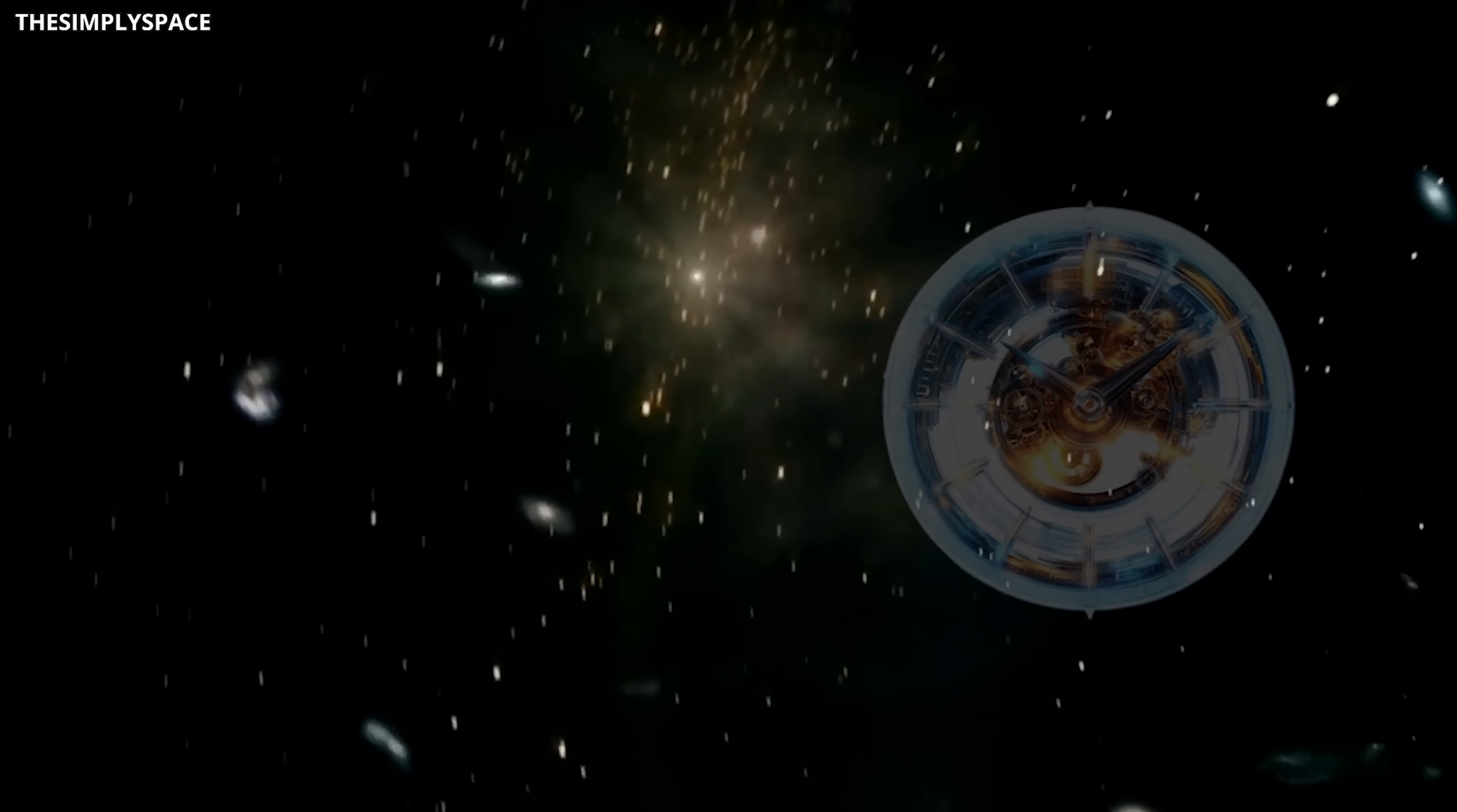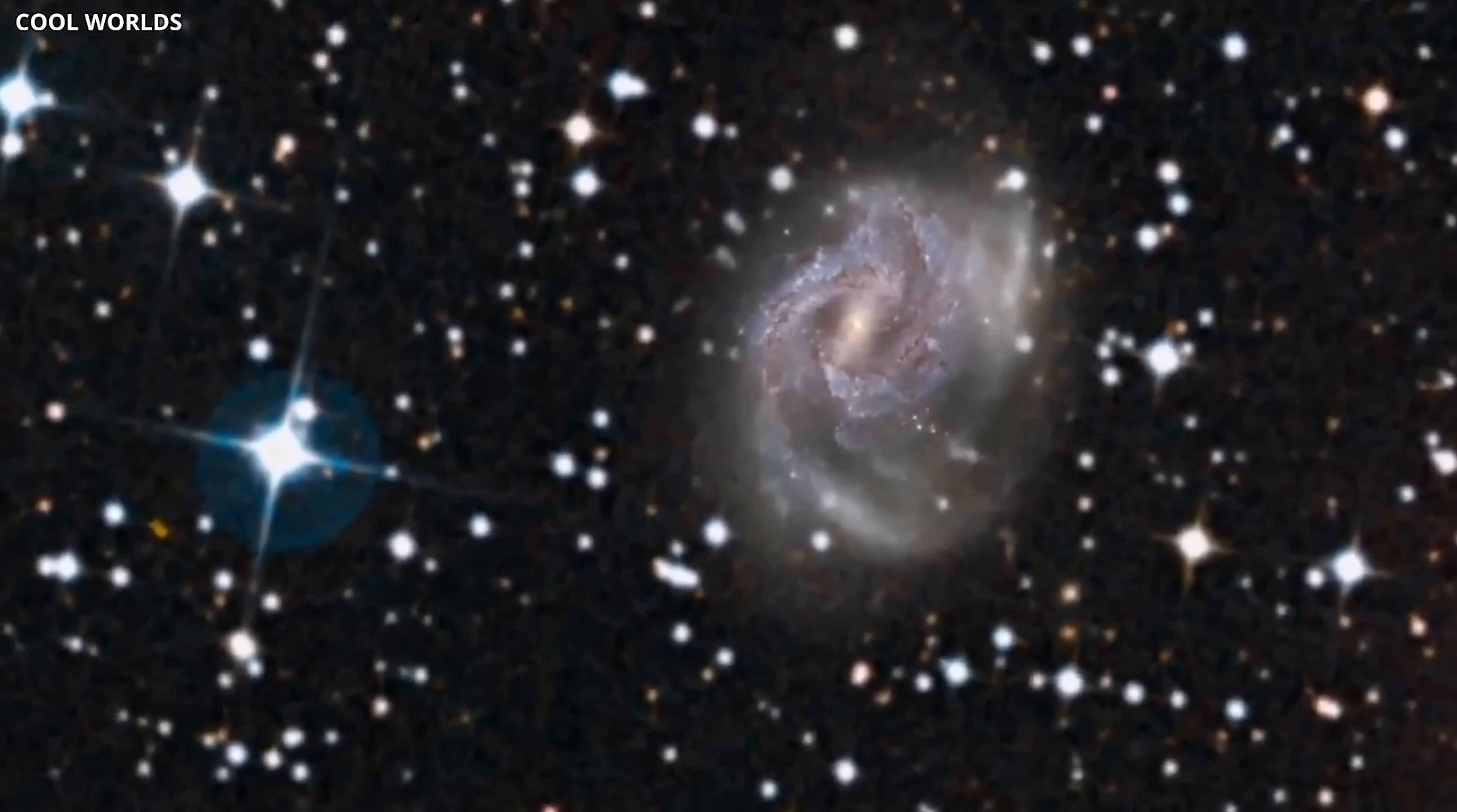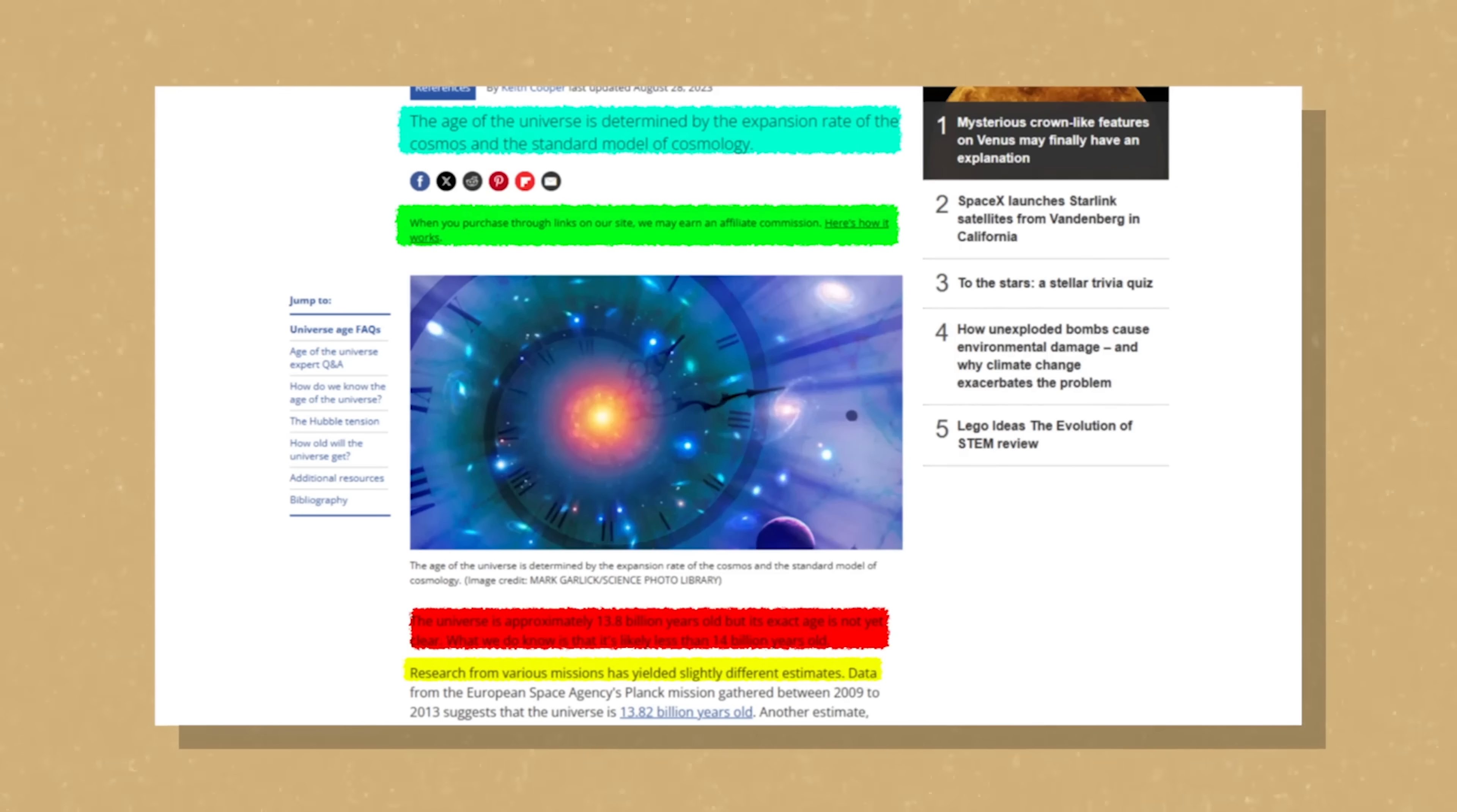For example, an atomic clock located within a galaxy could measure time as being up to one-third slower than an identical clock placed in the midst of a large empty void. Now, consider this over the extensive timescales of the universe. The universe is approximately 13.8 billion years old. Yet, in areas with scarce matter, such as cosmic voids, time has been moving more quickly. Therefore, billions of additional years might have elapsed in these voids compared to regions abundant with matter.